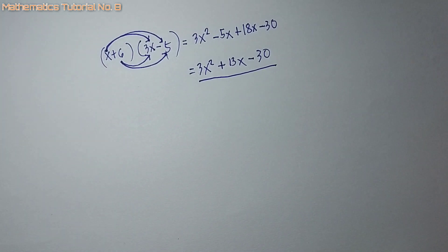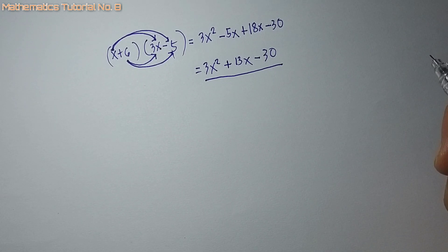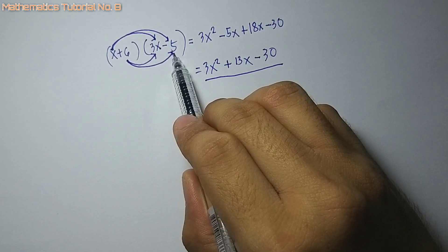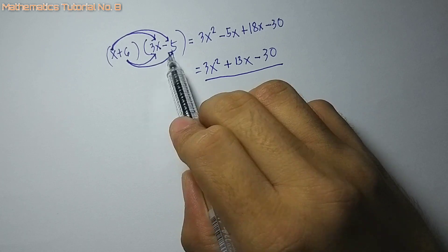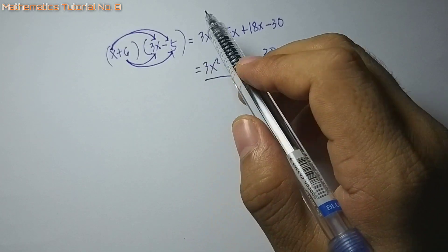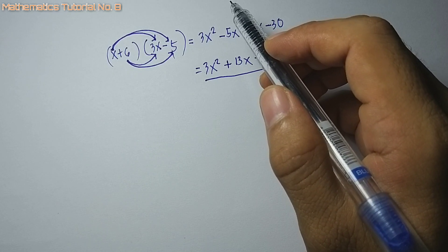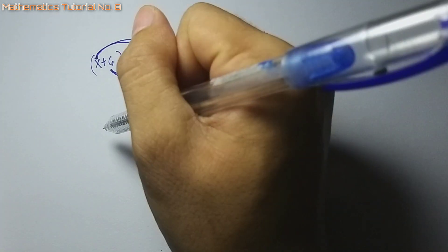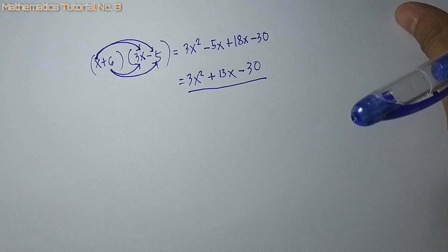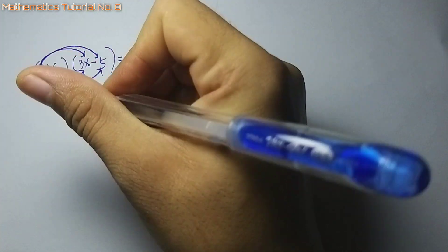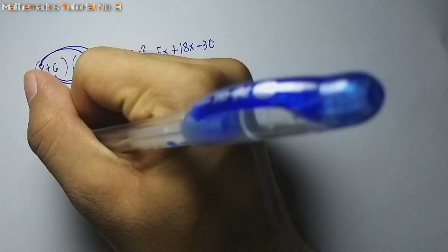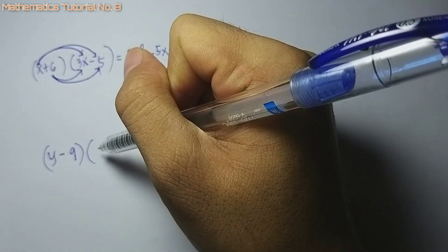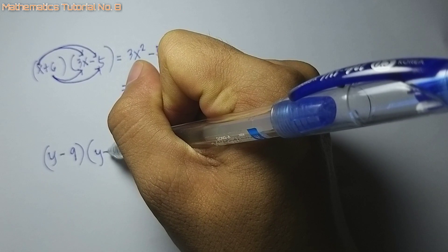So inaara ang multiplication of polynomials — ang rule: i-multiply ang tanang terms diri sa itong polynomial dito sa pikas pod na polynomial sa tanang pod na terms. Let's have another example para mas masabtan ang multiplication of polynomials. Let's have y minus 9 i-multiply sa y minus 12.